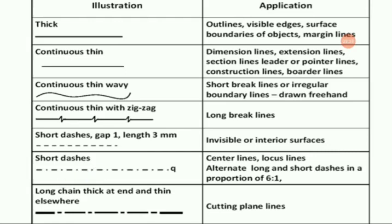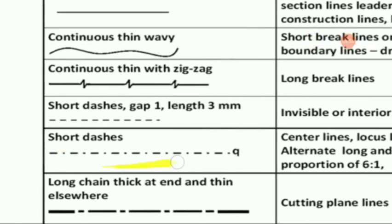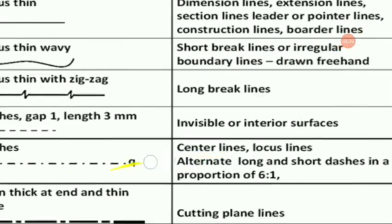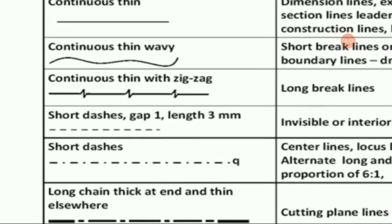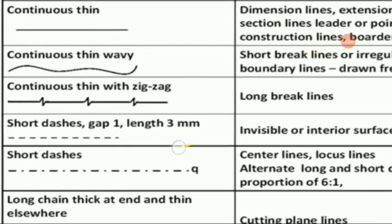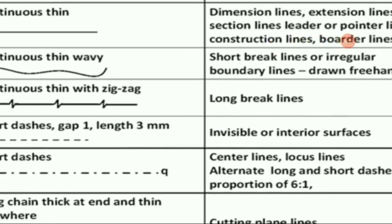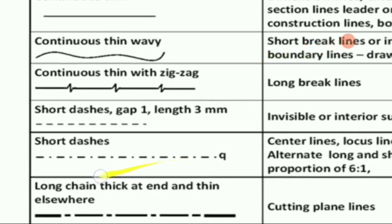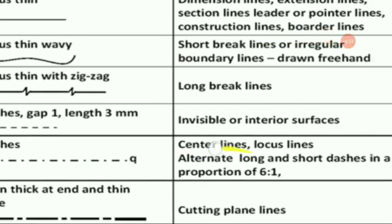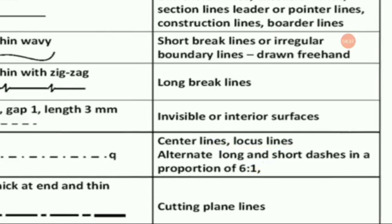The next type of short dashes has a point between the two dashes. This is a very important line — these are mainly used for center lines. Center lines have a dot in between the dashes, while the previous type had only dashes with no point. The previous dashed line was for invisible or interior surfaces, and this dotted dash line is for locating center lines. Long chain lines alternate long and short dashes in a proportion of 6 to 1.